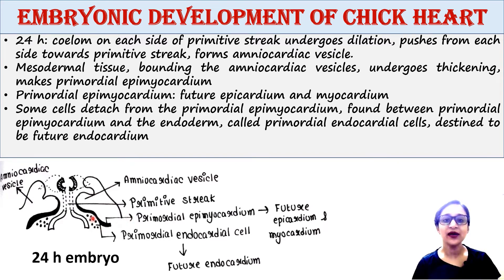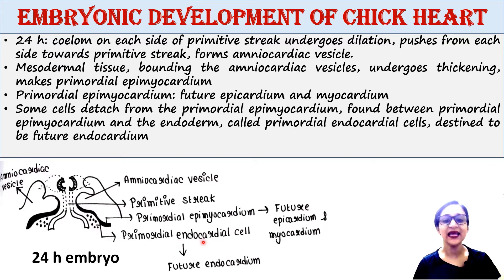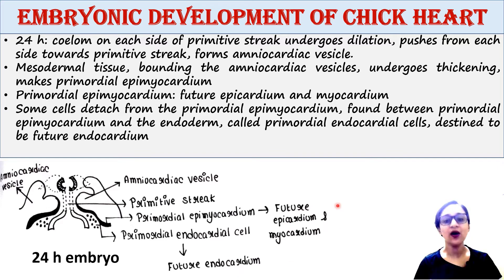Some cells detach from the primordial epimyocardium and aggregate loosely between it and the adjacent endoderm. These loose cells are called primordial endocardial cells, and they are designed to form the endocardium — the inner layer of the heart. So the heart has three layers: the outer epicardium, the middle myocardium, and the inner endocardium — all three layers are now accounted for.